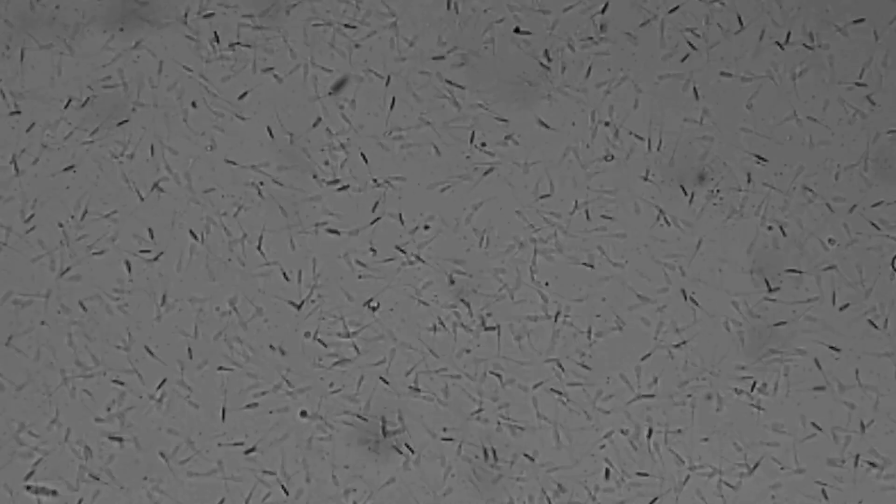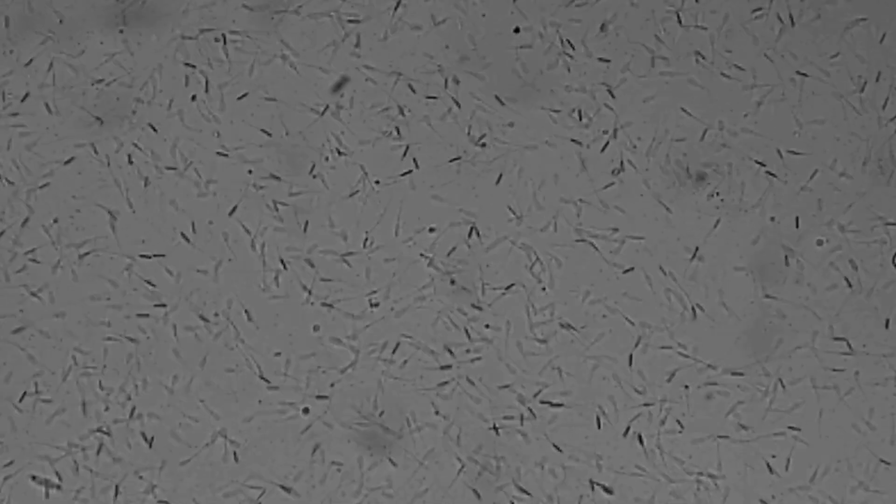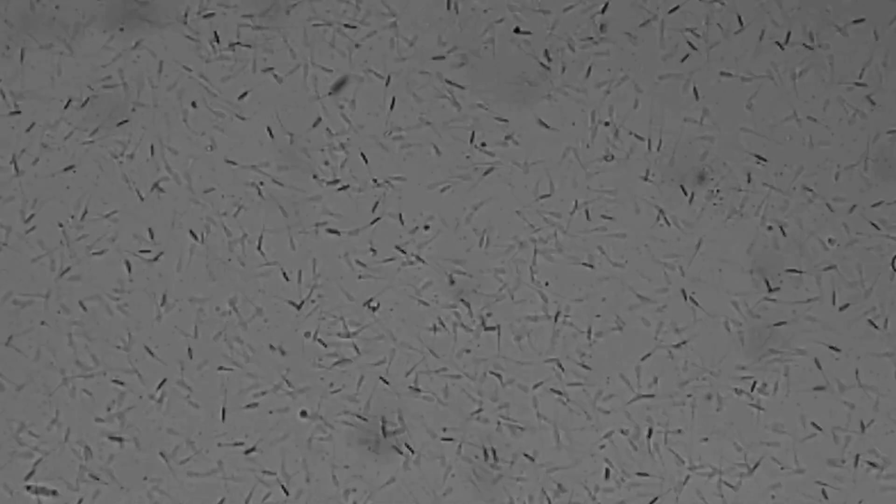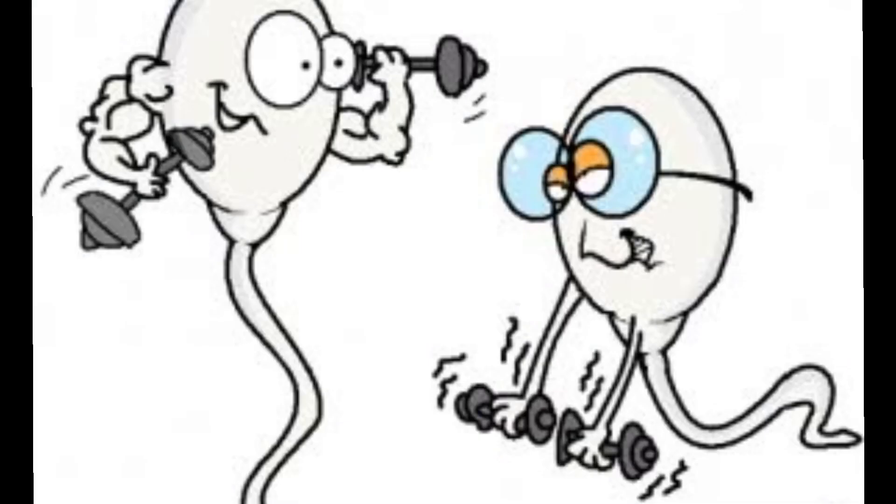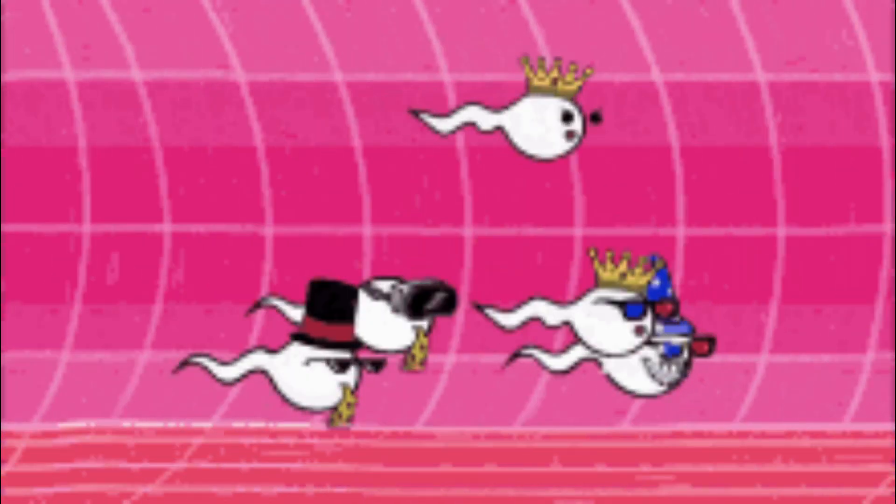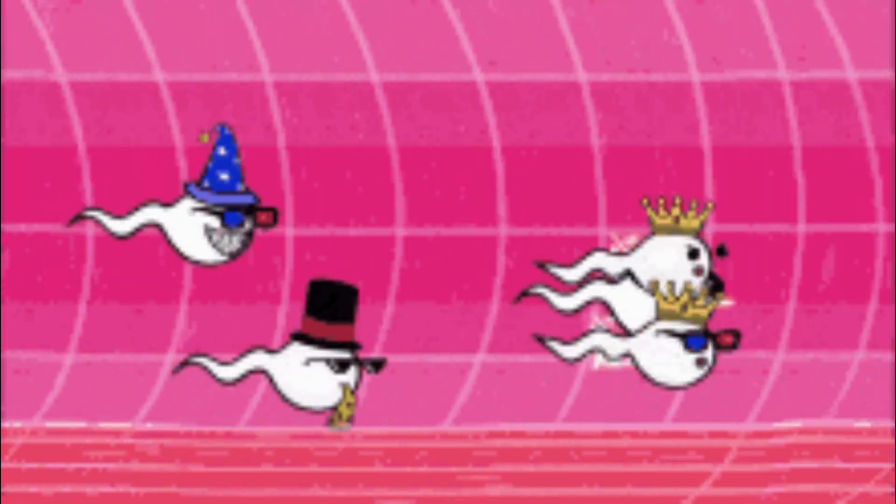During sexual intercourse, a man ejaculates about 20 to 150 million sperm that are deposited in the vagina of a woman. But only one sperm can fertilize the egg. Only the strongest, healthiest, and fastest swimming sperm will eventually make it to the egg.